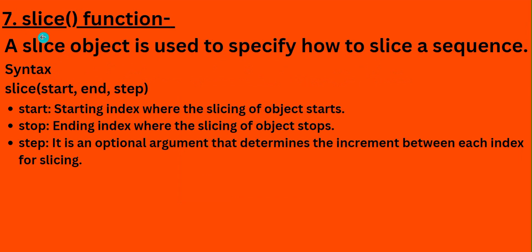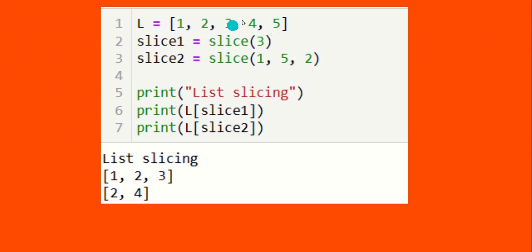Next, the 'slice' function. A slice object is used to specify how to slice a sequence. The syntax is slice(start, end, step). Start is the starting index where slicing begins, end is where slicing stops, and step is an optional argument which determines the increment between each index. For a list [1, 2, 3, 4, 5], declaring slice1 = slice(3) stops slicing at the 3rd element, giving output 1, 2, 3.